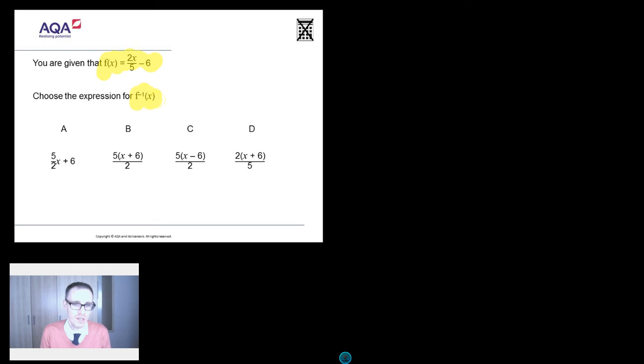But here's the brand new stuff. Choose the expression for what the flipping connects that. f with a little minus one floating around f. So f with a little minus one floating around x. What does that mean?